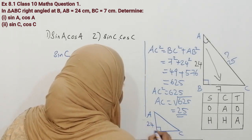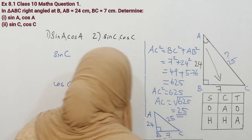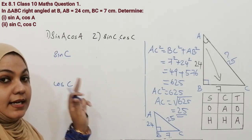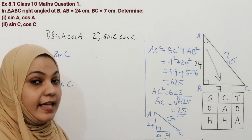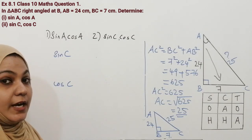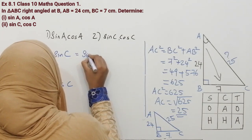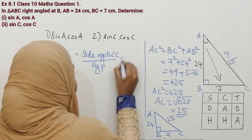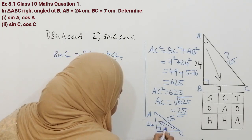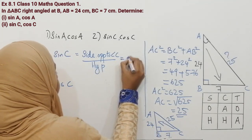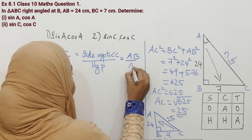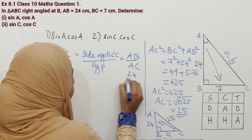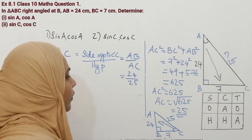In this triangle, AB is equal to 24, BC is equal to 7, and AC is equal to 25. Now we can solve our question. What is sin C? The side opposite to angle C divided by hypotenuse. Do not write the side opposite to angle A — that was in our first question. Side opposite to angle C is AB, and hypotenuse is AC. AB is 24 and AC is 25, so sin C is 24 by 25.